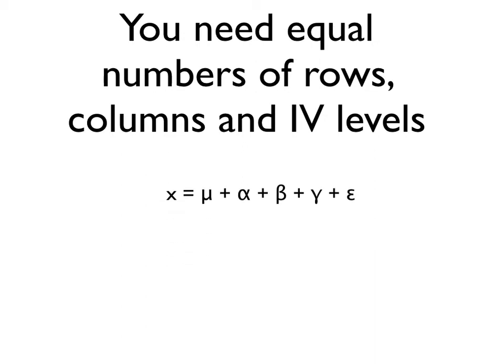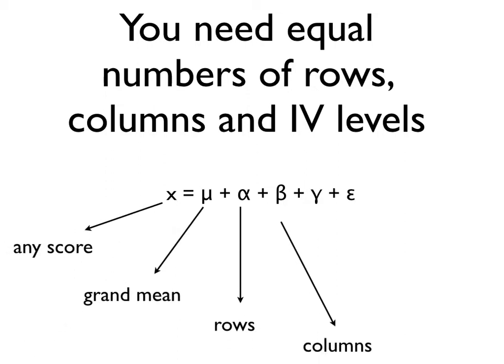And then what you get is X equals U plus alpha plus beta plus gamma plus epsilon. But that looks familiar. So any score equals the grand mean plus the rows, the columns, the independent variable. This is the one we care about anyway. And of course error, or residual. It's all called residual in this kind of analysis. I don't know why. What's left over? So that's why it's called residual I guess. And it's a nice general term residual for any kind of leftover variance. You'll see it a lot.